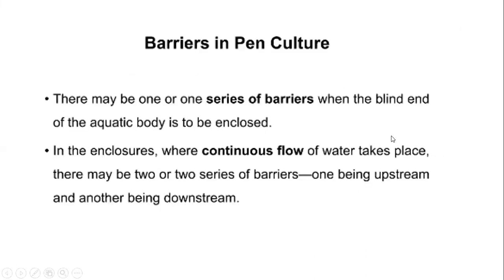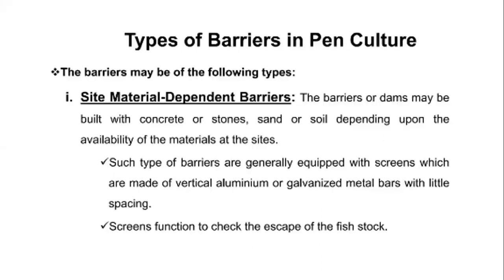Regarding barriers in pen culture, there may be one or a series of barriers when the blind end of the aquatic body is enclosed, where continuous water flow takes place. There may also be two barriers, one being upstream and the second one downstream. There are different types of barriers used in pen culture. The first is a site-material-dependent barrier: the dam may be built with concrete, stone, sand, or soil depending on the availability of material at the site. Such barriers are generally equipped with screens made of vertical aluminium or other metal bars with little spacing to check the escape of fish.